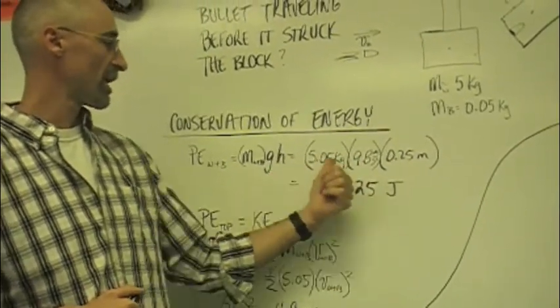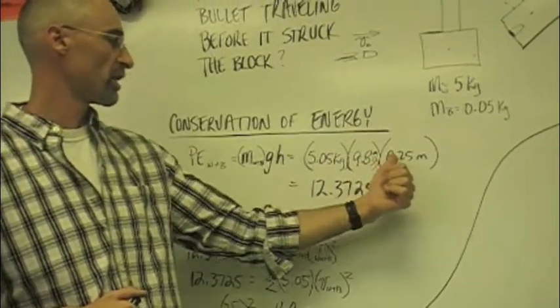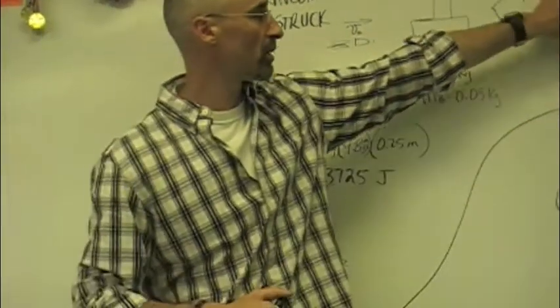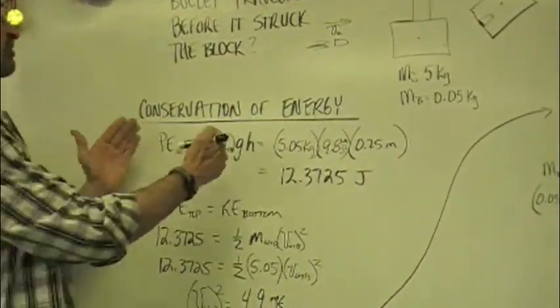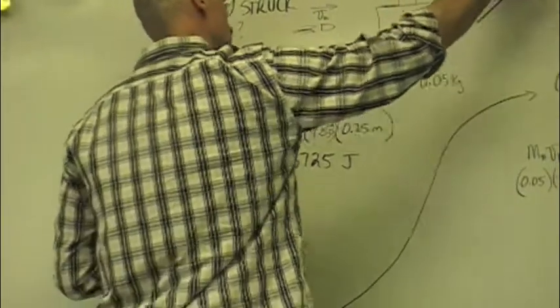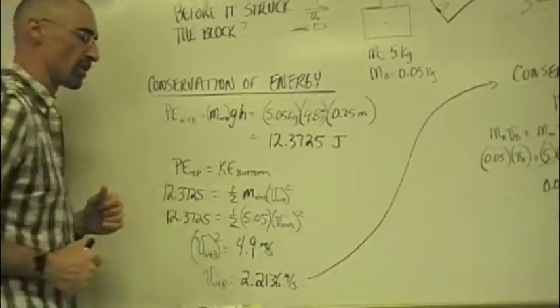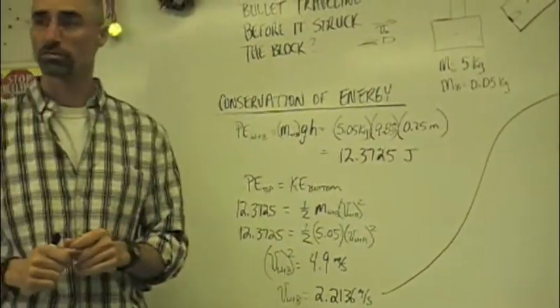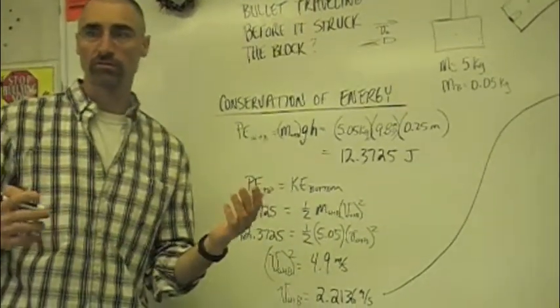The acceleration due to gravity is 9.8 meters per second squared. And the height that the block went up is 0.25 meters. So the potential energy of the block and the bullet at its very maximum height is going to be 12.3725 joules. That should be pretty straightforward. Everybody see that?